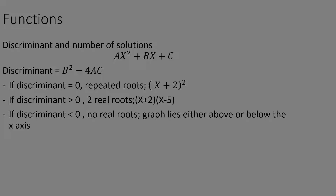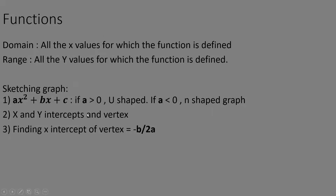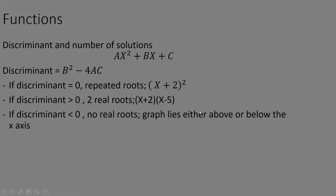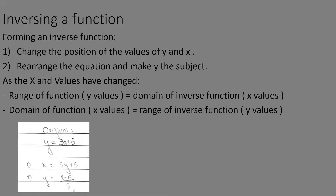If the discriminant is greater than zero, there are two real roots and two different x intercepts, for example (x + 2)(x - 5). If the discriminant is less than zero, there are no real roots and the graph lies either above or below the x-axis. If a is positive and the discriminant is negative, the graph lies above the x-axis; if a is negative and discriminant is negative, the graph lies below.